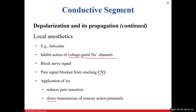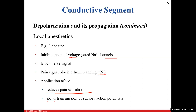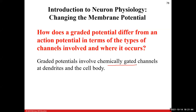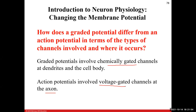Ice helps reduce pain — even sitting in a snow bank. Regarding how graded potentials differ from action potentials in terms of channels and location: graded potentials use chemically gated channels in the receptive segment (dendrites and cell body); action potentials are only found in the axon and involve voltage-gated channels. Definitely know that difference.